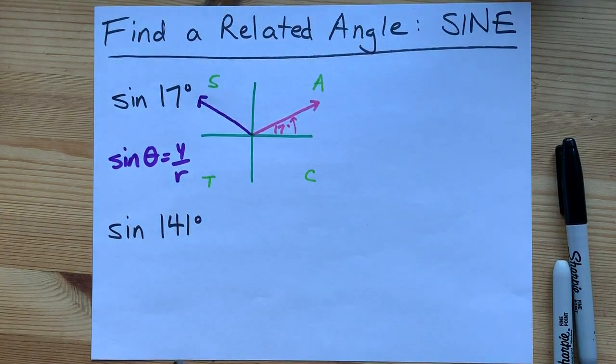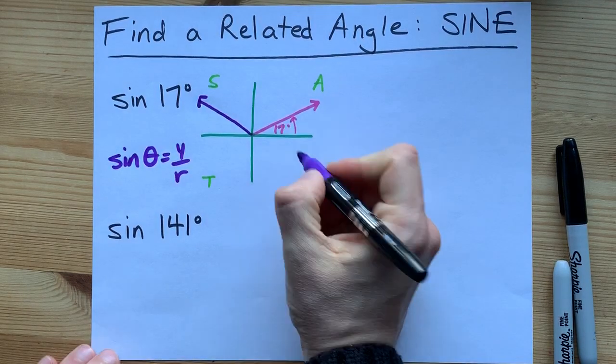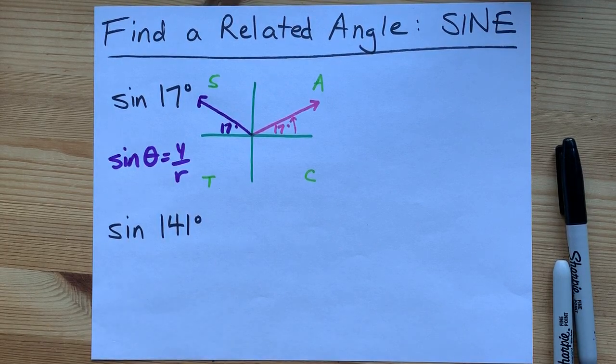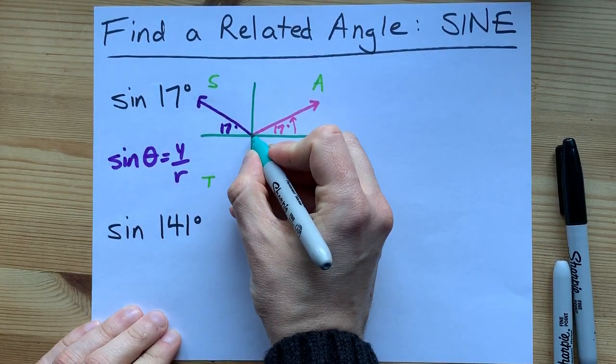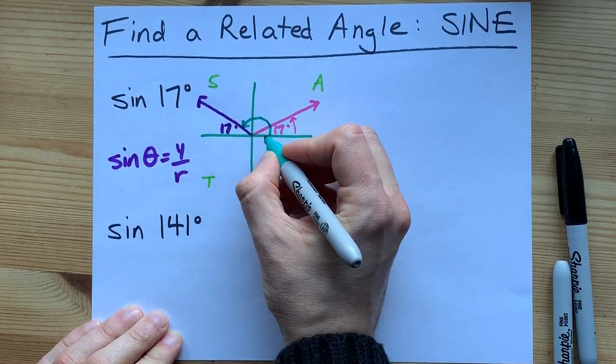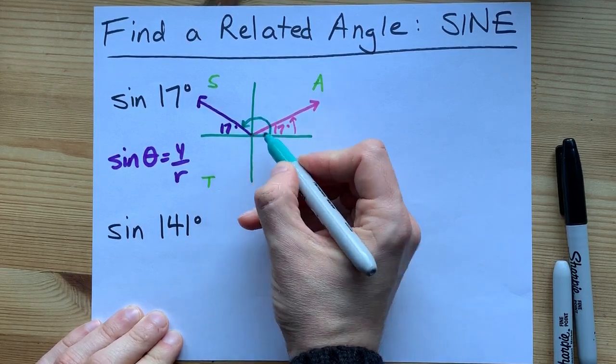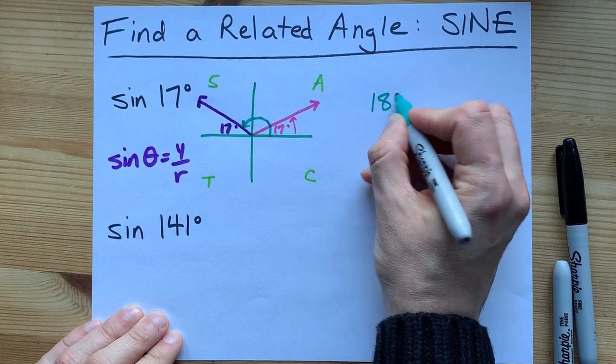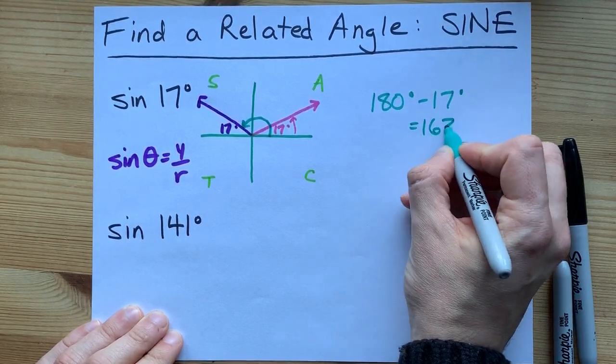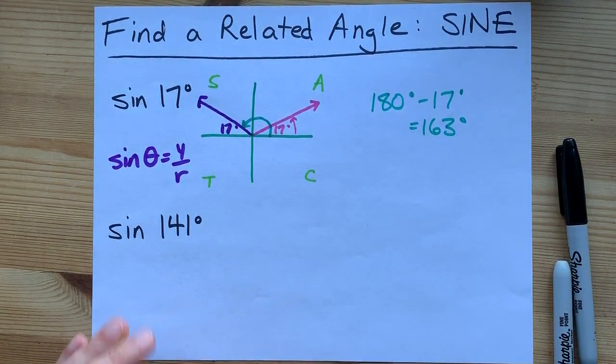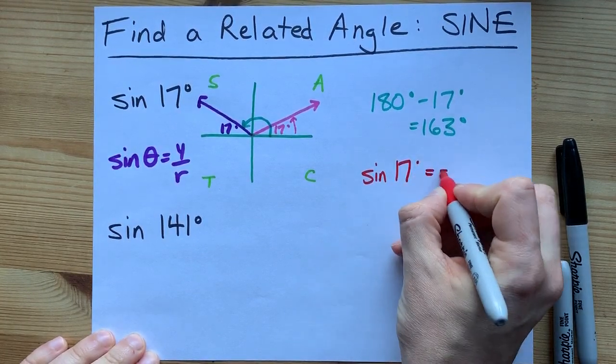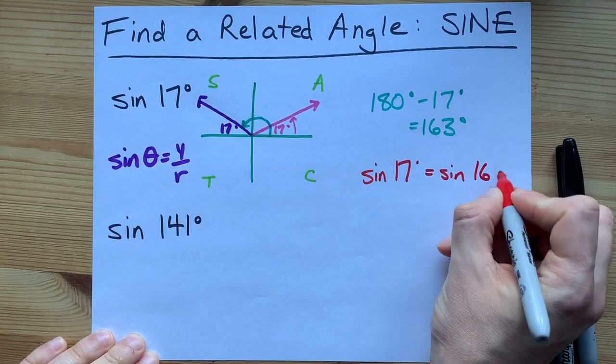Now, here's what's fascinating about related angles: if this is 17 degrees, this is 17 degrees, and all you have to do is figure out how big the angle is that takes you from the positive x-axis all the way around to where you're going. This is actually 17 degrees short of 180, so you can do 180 degrees minus that 17 degrees to get 163. Your final sentence here should probably say something like, the sine of 17 degrees equals the sine of 163 degrees.